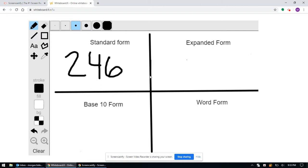Next we're going to move on to expanded form. Now in expanded form, we want to stretch out the number by the place values. So starting with the hundreds place, we have a 2 in the hundreds place, and 2 in the hundreds place gives us a value of 200.